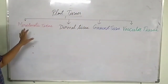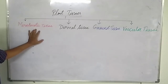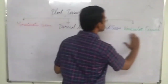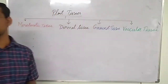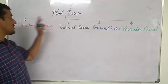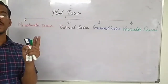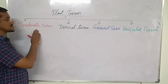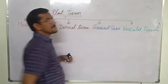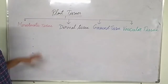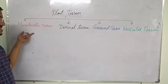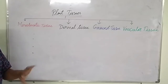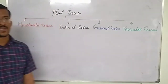Meristematic tissue is a continuously dividing tissue, while the other three types are permanent tissues. We can also divide plant tissues into two categories: continuously dividing tissues and permanent tissues. Permanent tissue means no division occurs in the remaining three tissue types.